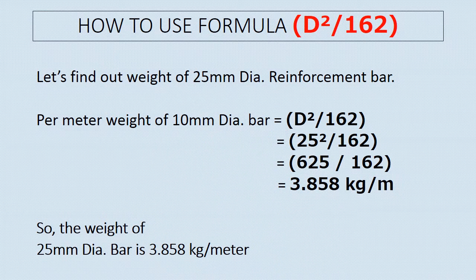Let's find out the weight of a 25 mm diameter reinforcement bar. Per meter weight of 25 mm diameter bar equals D²/162. By putting the value of the diameter in the formula and solving, we get the answer 3.858 kg per meter. So the weight of a 25 mm diameter bar is 3.858 kg per meter.